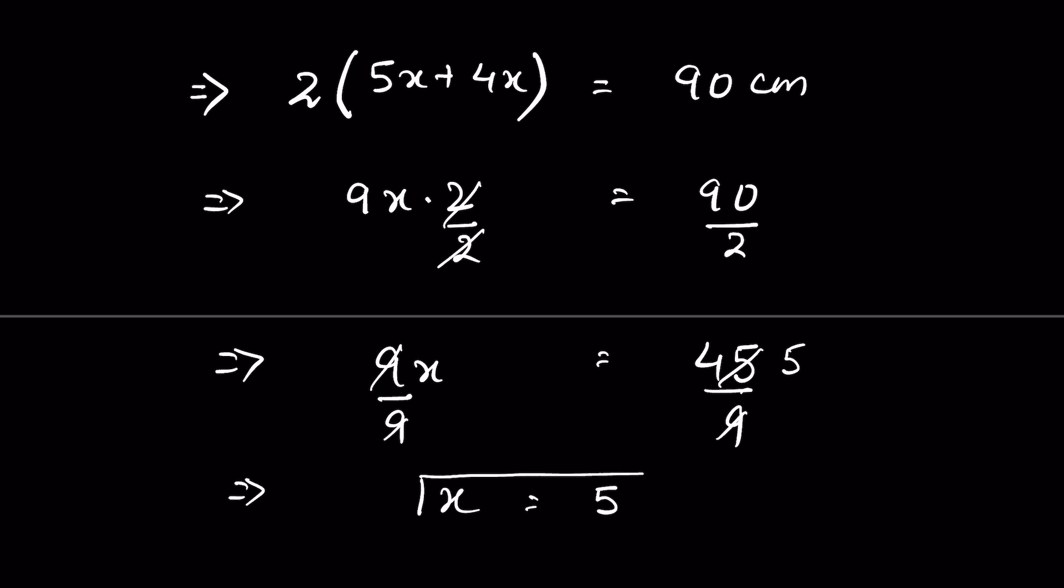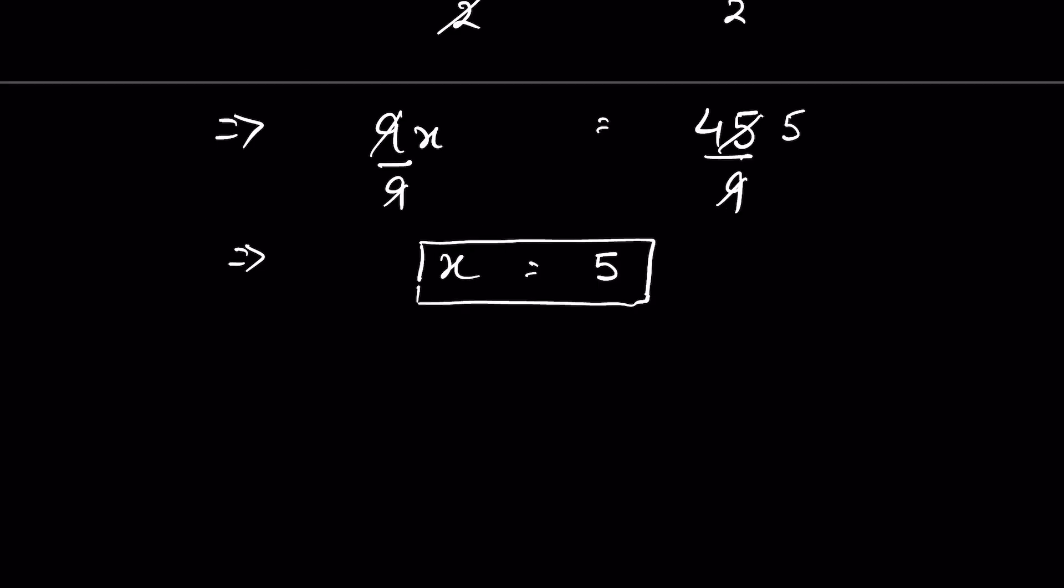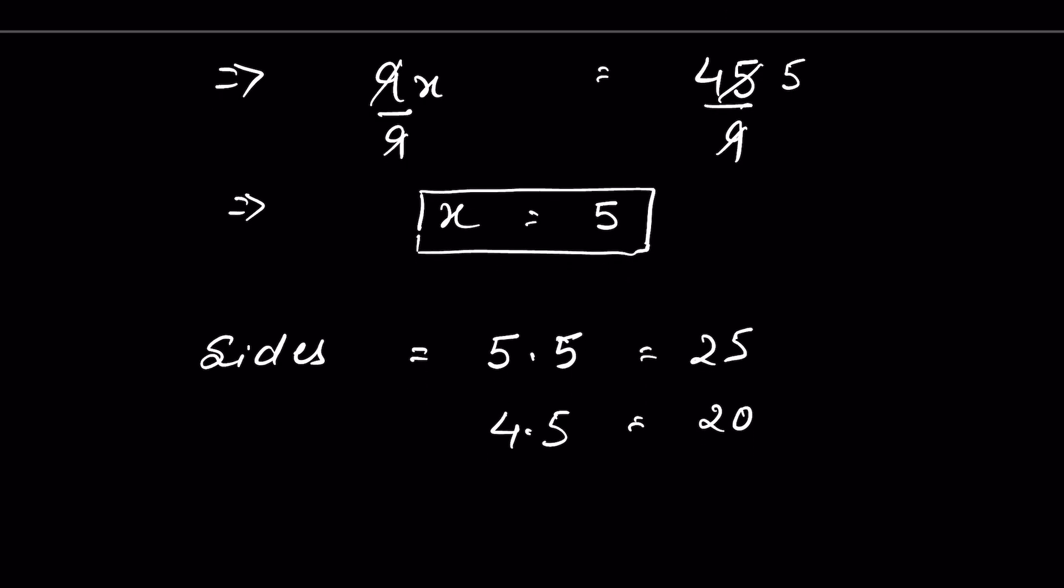So the ratio constant is 5. From here we can calculate the sides. Then the sides are 5 times 5, that is 25, and 4 times 5, that is equal to 20. So sides are 25 and 20 centimeter.